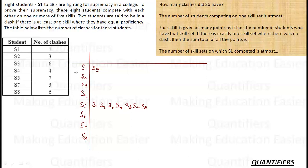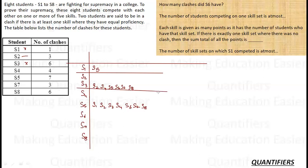S3 had clashes with six people. S3 cannot clash with himself, and S1 has already used its only clash with S5, so S1 is out. Therefore S3 must have clashed with S2, S4, S5, S6, S7, and S8. Similarly, S8 also has six clashes, and by the same logic S8 clashes with S2, S3, S4, S5, S6, and S7.